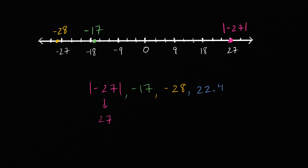And then finally we have 22.4. Let's see, we have 18, 21, 22 would be here. So 22.4 is going to be roughly right over there. That is 22.4.